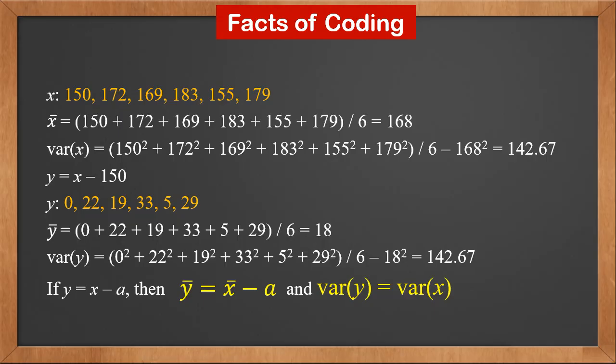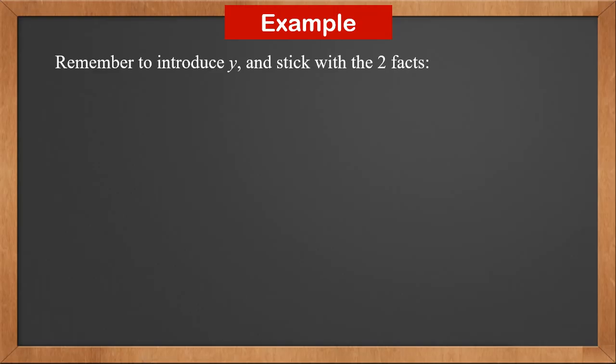We know that coding shifts all values to the left by a certain distance, but the distance between values is not changed. Therefore, the mean is shifted by the same distance, but the variance remains the same. When solving coding problems, remember to introduce y, and keep with the two facts.